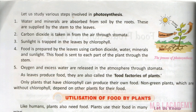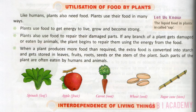The next topic is the utilization of food by plants. Like humans, plants also need food and use it in many ways. Plants use food to get energy to live, grow and become strong. Plants also use food to repair their damaged parts — if any branch gets damaged or eaten by animals, the plant begins to repair it using energy from food.